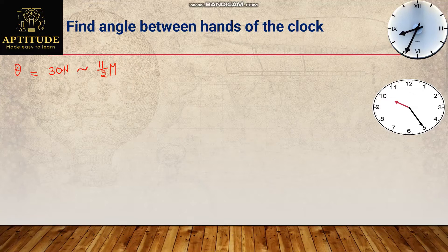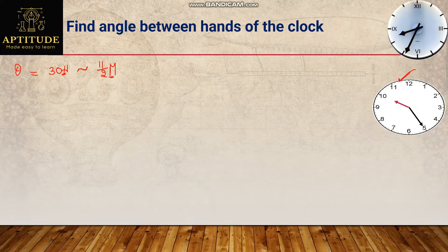We won't take the minus symbol directly because we don't always know whether minutes or hours will be higher. In this case, hours is higher — because it's 10 — so the angle covered by the hours hand is more than the angle covered by the minutes hand. H represents hours and M represents minutes. In this clock, hours is 10.